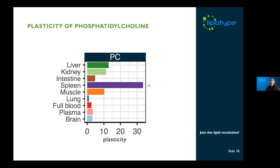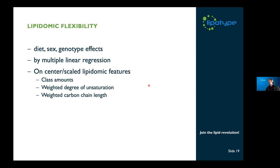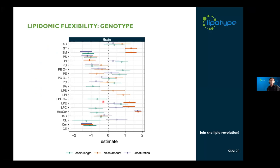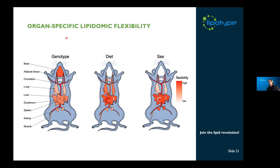We also looked at lipidomic flexibility as induced by diet, sex, and genotype effects, using multiple linear regression on center-scaled lipidomic features — which are class amounts and weighted degree of unsaturation and weighted degree of hydrocarbon chain length for each lipid class. For brain affected by genotype, we see that chain length and unsaturation degree for sphingomyelin differ between the two genotypes. There are also effects for hexosylceramide and ceramides, indicating quite a genetic impact on sphingolipid composition. Doing this analysis for all classes and all organs yielded a small atlas of organ-specific lipidomic flexibility.